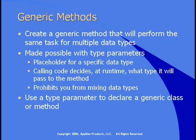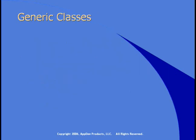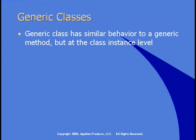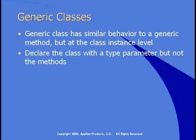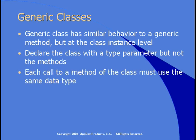You'll use the type parameter to declare that a method or a class is generic. A generic class has similar behavior to a generic method but is at the class level — actually at the class instance level. You declare the class with a type parameter, not the individual methods. What you're enforcing is that when you create an instance of the class, every call to a method of the class has to use the same data type. If you want to use a different data type, you can create a different instance of the class.